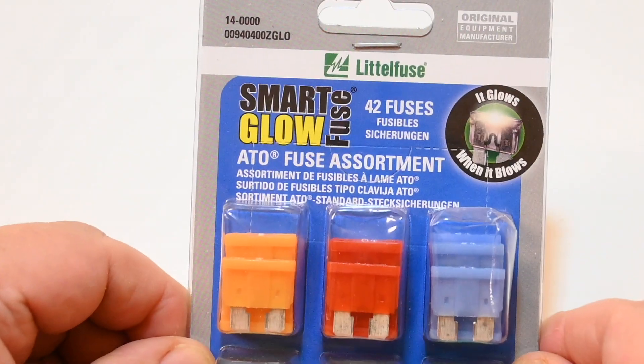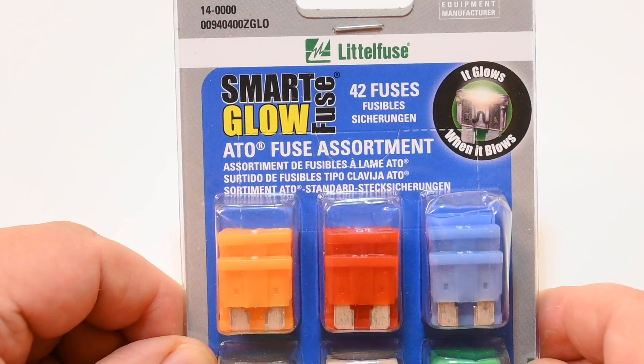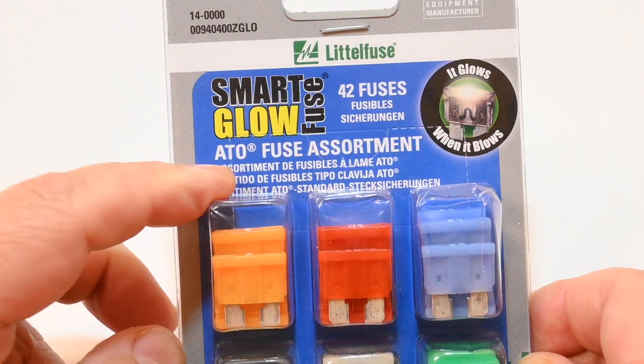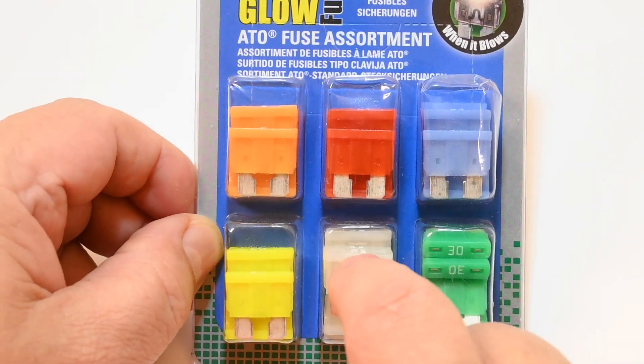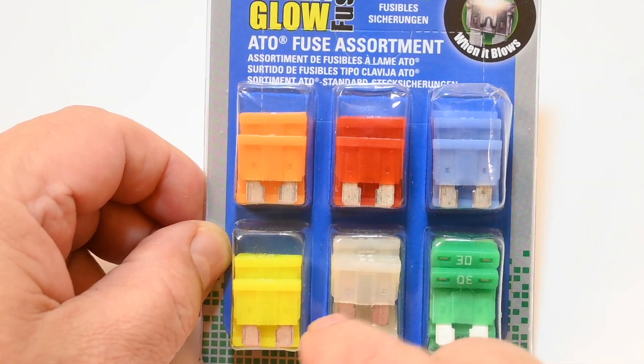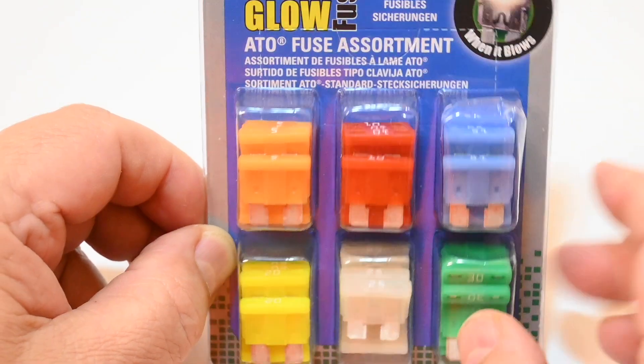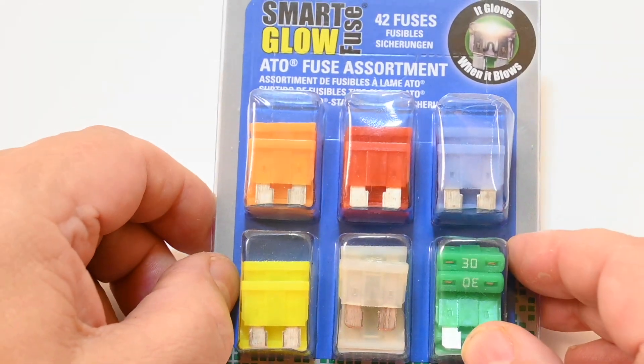You can also obtain these glow fuses, and these are from Littlefuse, ATO fuses, and Bussman makes something similar. And these fuses have an LED. And when the circuit opens, the LED will light up, and that will let you know that the fuse is blown.